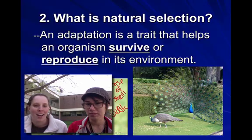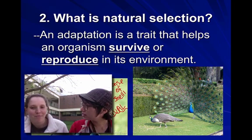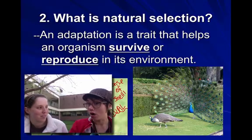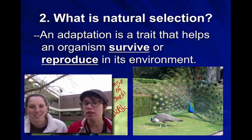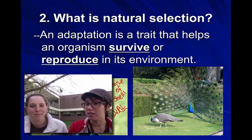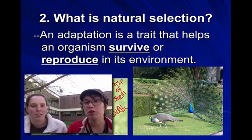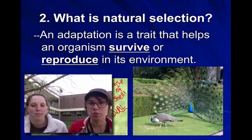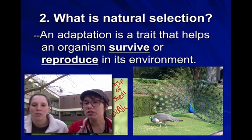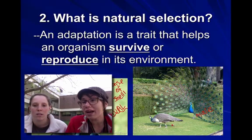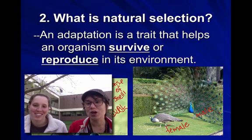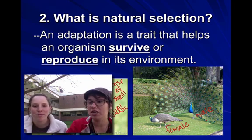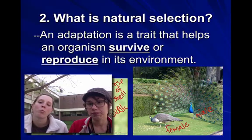I cannot figure out why this peacock would have this adaptation, but there has to be a reason. Otherwise that gene wouldn't exist — it wouldn't be able to pass on the trait that allows it to make that huge tail with all those colors. One thing we do know about peacocks is that the only way they can mate — and this is true for birds in general — female birds like bright colors and they love those big feathers. So if this peacock didn't have this adaptation, it wouldn't be able to reproduce.